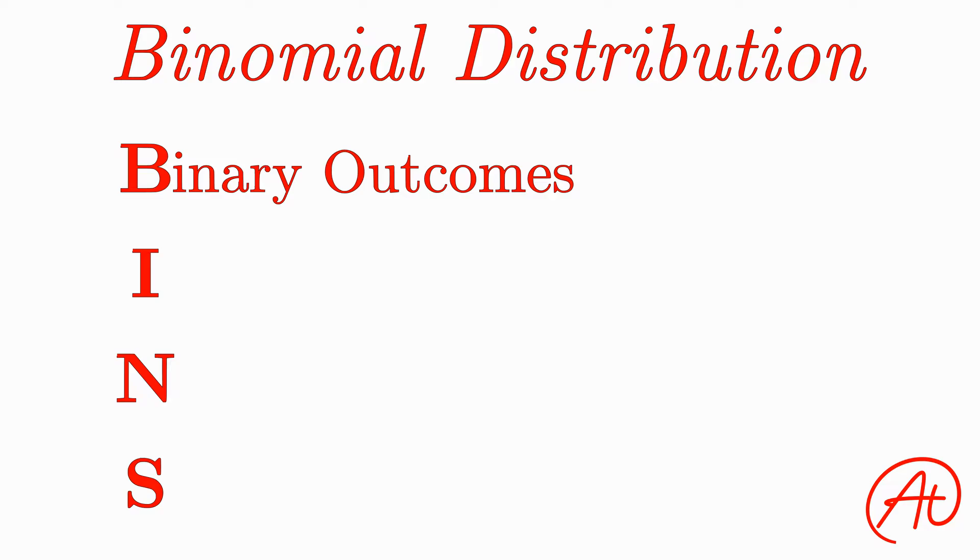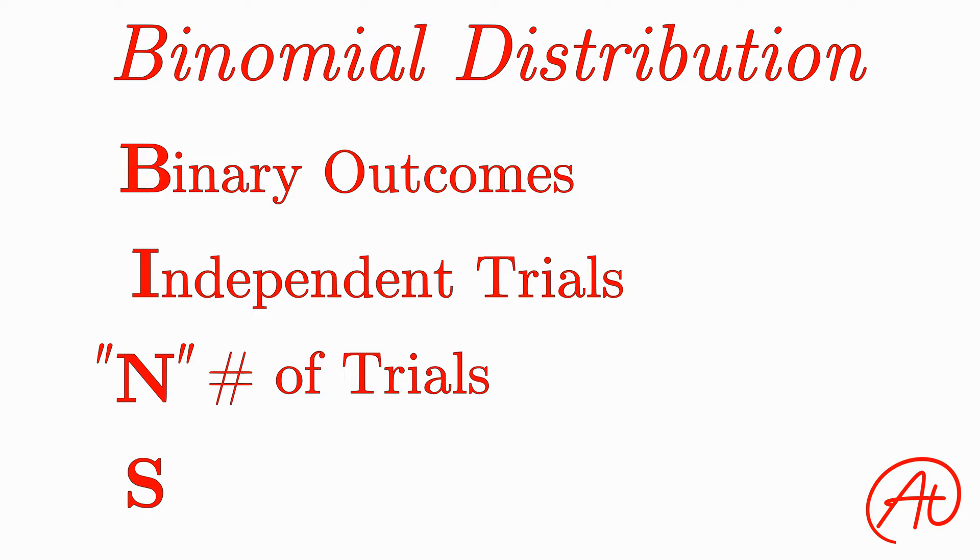Next, the binomial distribution must have independent trials. In other words, the success or failure of one event must not somehow affect the success or failure of any other event. Then, this distribution must also have a defined n number of trials. And finally, each trial must have the same probability of success each time.